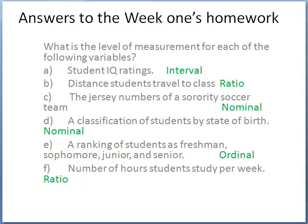C, the jersey number of the sorority soccer team, and D, a classification of student by state of birth — for both of these we use the nominal level of measurement. Why? Because they can only be classified. You cannot rank them or calculate them using any math method.